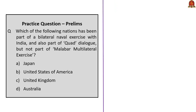Which of the following nations has been part of a bilateral naval exercise with India and also part of the Quad Dialogue, but not a part of the Malabar multilateral exercise? The four countries are Japan, United States, United Kingdom, and Australia. Quad consists of India, Japan, USA, and Australia — so we can directly eliminate the United Kingdom. India and the USA started the Malabar exercise as a bilateral exercise in 1992, and Japan joined in 2007 making it multilateral, but Australia has not yet joined. So Australia is the correct answer — it is part of Quad Dialogue but not part of the Malabar multilateral exercise, and it has conducted joint naval exercises with India.